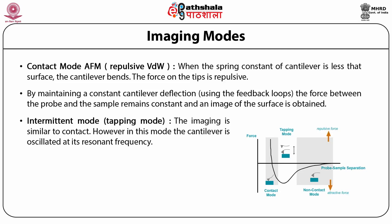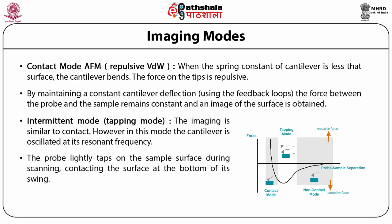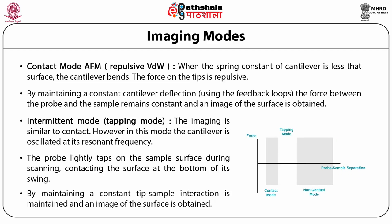The next mode is intermittent contact mode, also known as tapping mode. The image here is similar to contact mode; however, in this mode the cantilever is oscillated at its resonant frequency. The probe lightly taps on the sample surface during scanning, contacting the surface at the bottom of its swing. By maintaining a constant oscillation amplitude, a constant tip-sample interaction is maintained and an image of the surface is obtained, as illustrated in the figure shown in this slide.